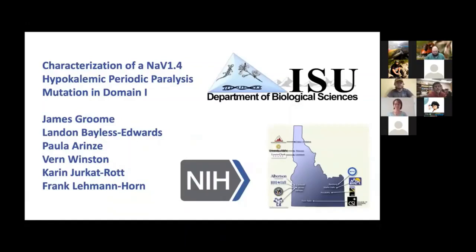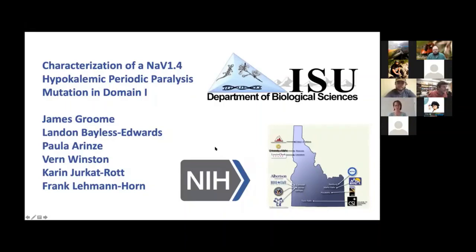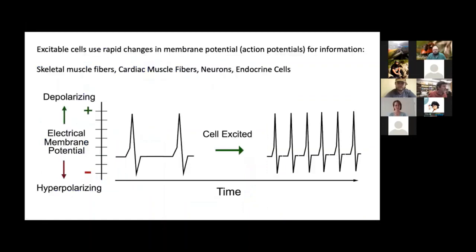Our lab works on ion channels, which are proteins in excitable tissue that code and send information. The specific project I'm going to talk about today is on an inherited mutation for a skeletal muscle and neuromuscular disorder called hypokalemic periodic paralysis. Some collaborators from ISU and also from Germany are shown on this slide. We're funded by NIH and work a lot with INBRE within the Department of Biological Sciences.